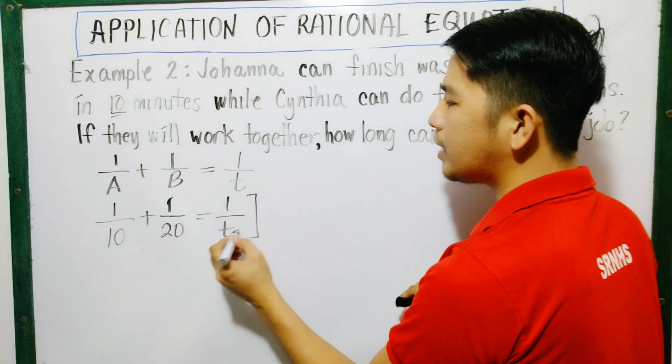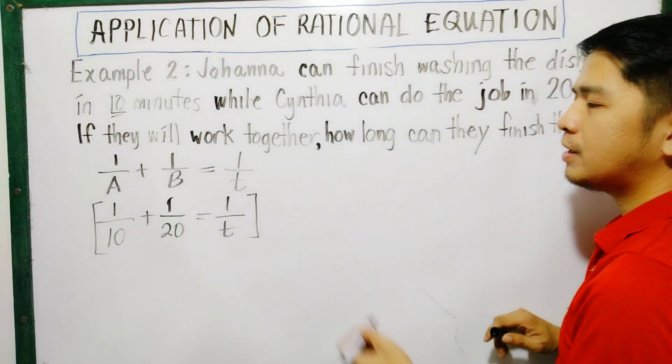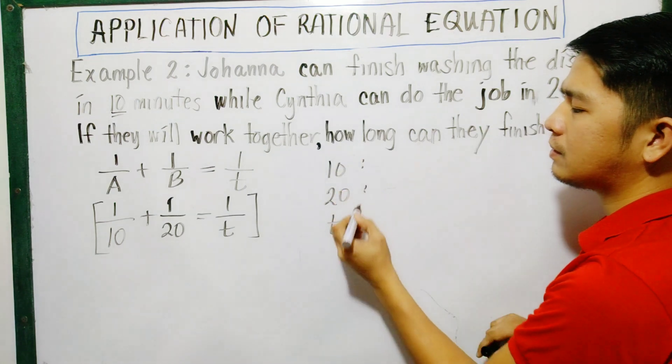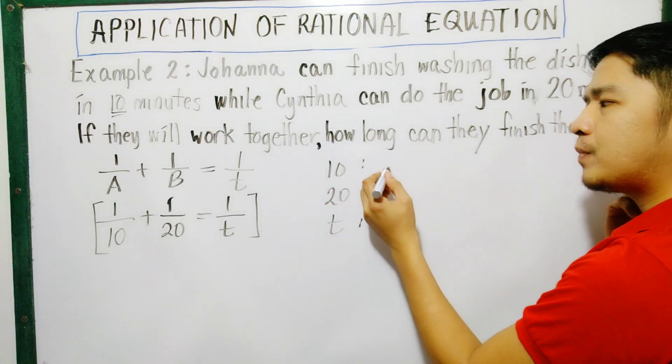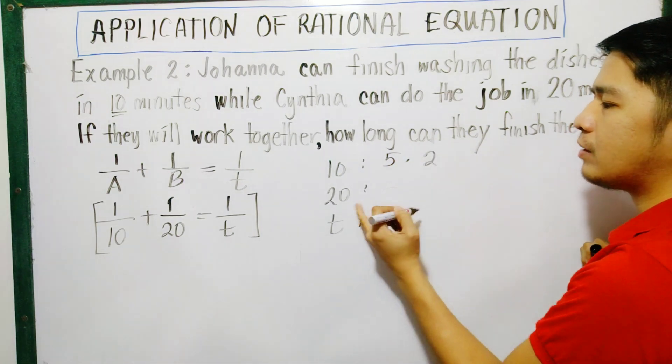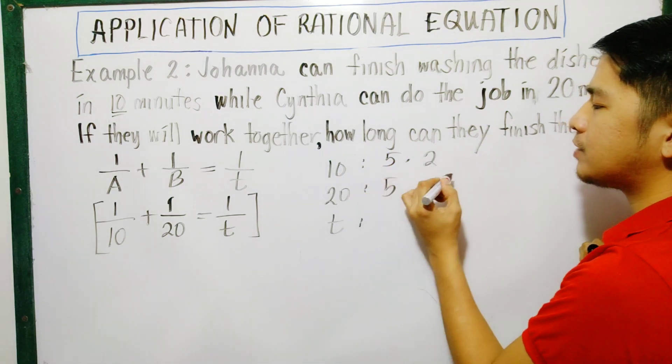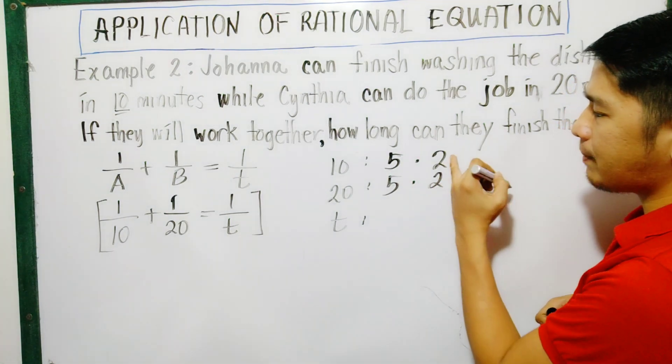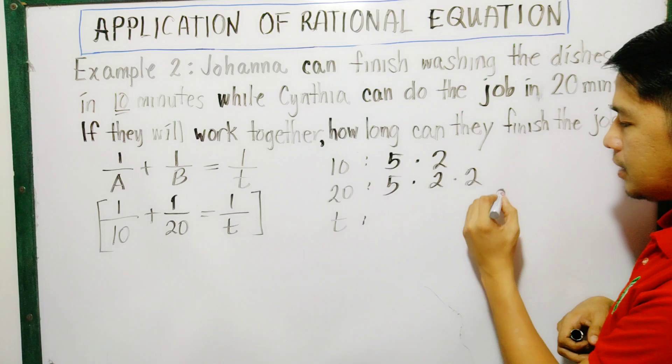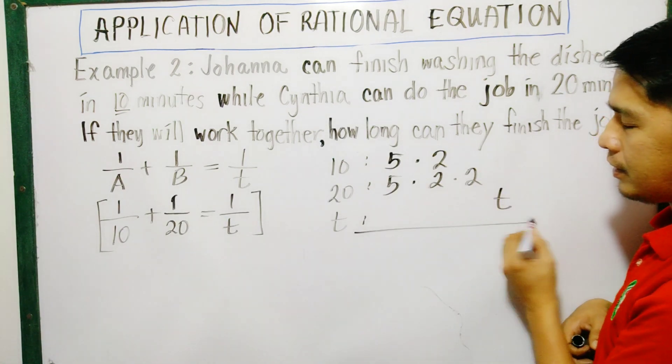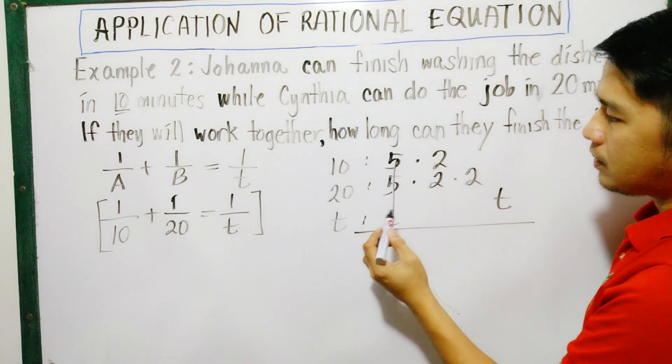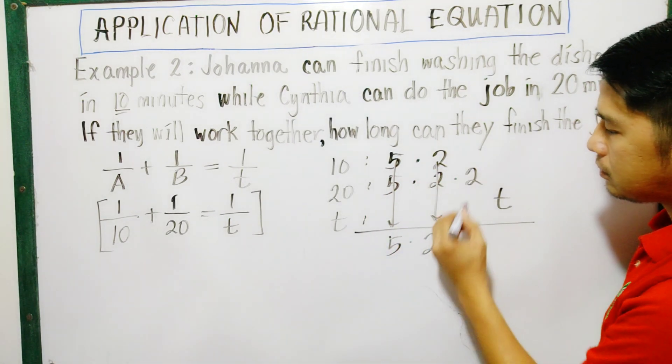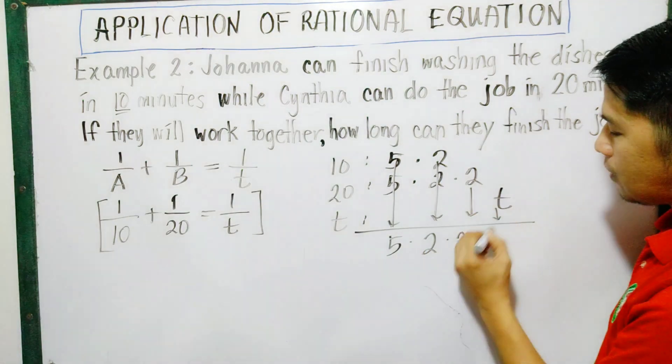So let us multiply it by the LCD. Let us find the LCD. This is 10, this is 20, then this is T. Factors of 10: 5 times 2. Factors of 20: that is 5 times 4. But 4 can be 2 times 2. They have a common factor here. And then T, has no common factor. Just write it there. Same, copy as 1. Copy as 1. Bring down these two.